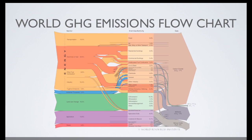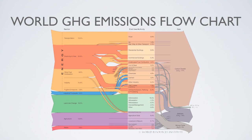At the sector level, the largest sources of global GHG emissions are electricity and heat, land use change — such as clearing of forests for farming — transportation, agriculture, and industry.